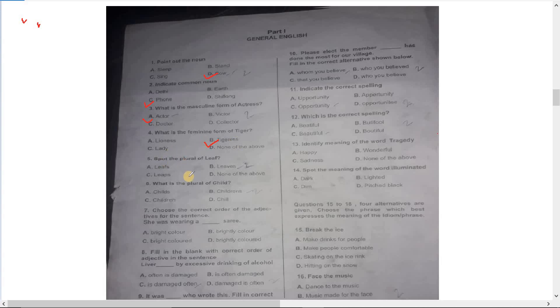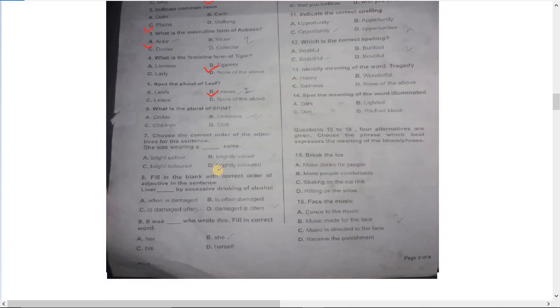Number five: spot the plural of leaves. Leaves is already plural. Number six: what is the plural of child? Children, C-H-I-L-D-R-E-N.